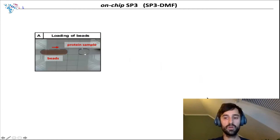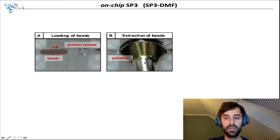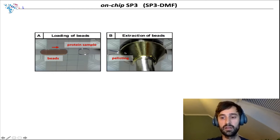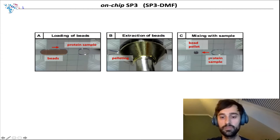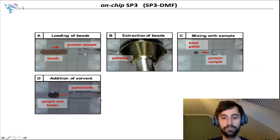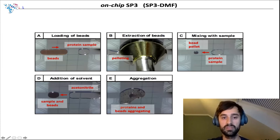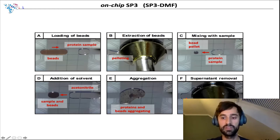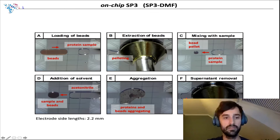We implemented SP3 on-chip to remove our pluronic surfactant. We load beads onto the chip where we already have a protein sample containing pluronic surfactant. We then place a permanent magnet on the chip to make a bead pellet — and I should note that today we already have a more elegant technical solution to pellet the beads. With this solution, we can actually pellet several bead samples at the same time. When we have our bead pellet, we mix it with the protein sample and add acetonitrile to the mixture. This instantaneously leads to aggregation of the proteins on the beads. The electrode side lengths are about 2.2 millimeters, and the volume of this droplet is around 1 microliter.